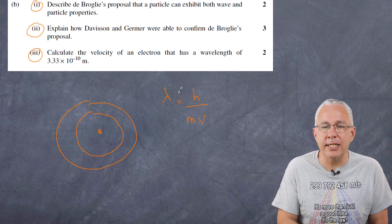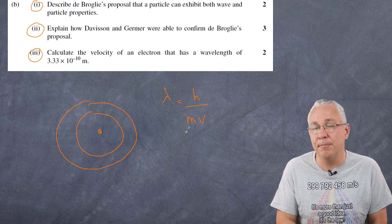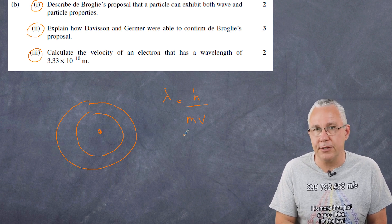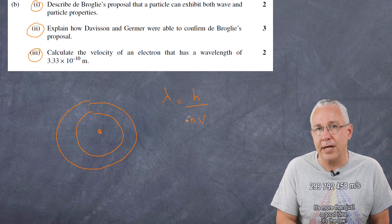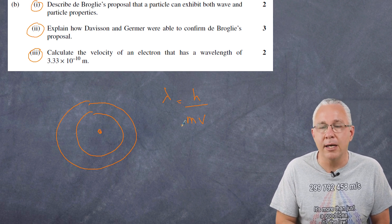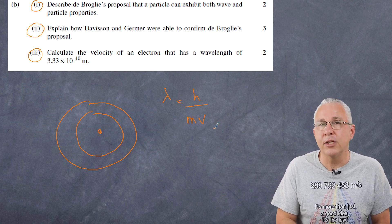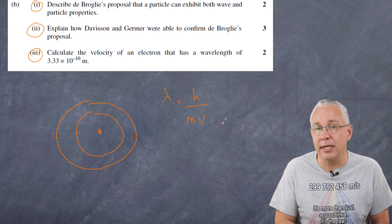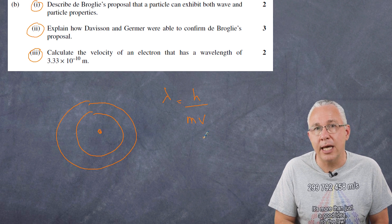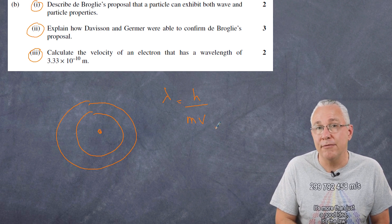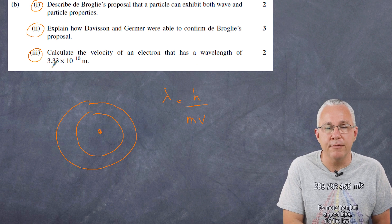To explain how Davisson and Germer confirmed de Broglie's proposal: if something has a wave-like nature, it can cause interference. You know from Module 7 that shining light through a double slit produces an interference pattern. Davisson and Germer fired electrons at a crystal lattice, and instead of just getting a blob at the other side, they got diffraction and interference patterns — which is fundamentally a wave-like property. This established that electrons can produce wave-like behaviour and that their wavelength is measurable.